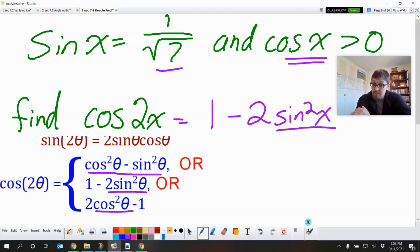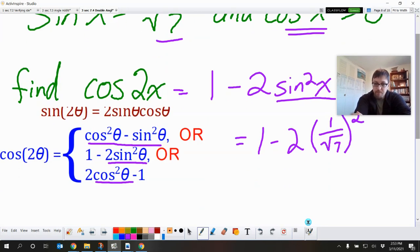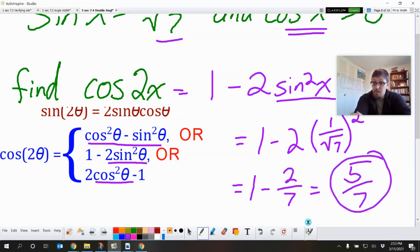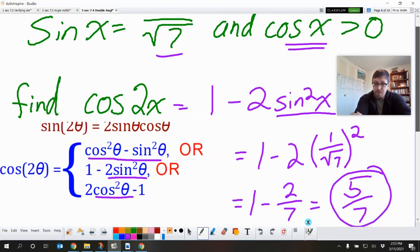So let's just do 1 minus 2 sine squared x. Okay, well, we know what sine squared is. It's 1 over square root of 7 squared. Well, that equals 1 minus 2 sevenths, which equals 7 sevenths minus 2 sevenths, 5 sevenths. And we're done. Just like that. So easy.